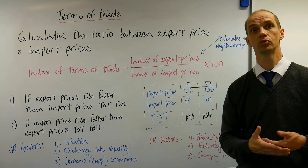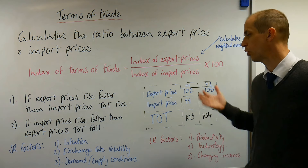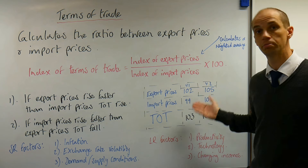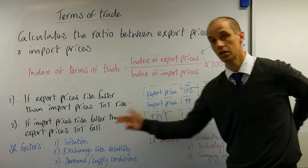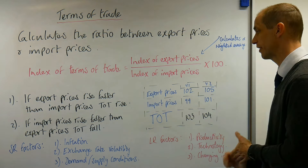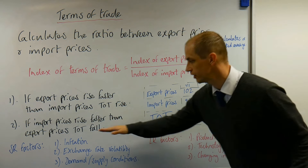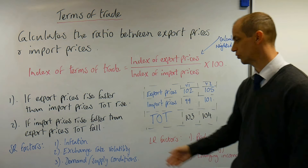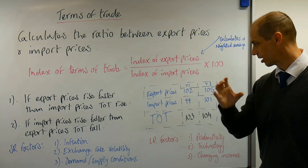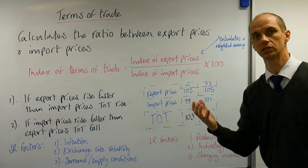Third, demand and supply conditions: strong demand for exports can pull up prices via a demand-pull mechanism, while supply shocks can feed through as cost-push inflation. So it's not right to always want improving terms of trade — if it's driven by high inflation or a dangerously appreciating exchange rate, that's bad news; if it's driven by strong demand for your product, that could be good news.